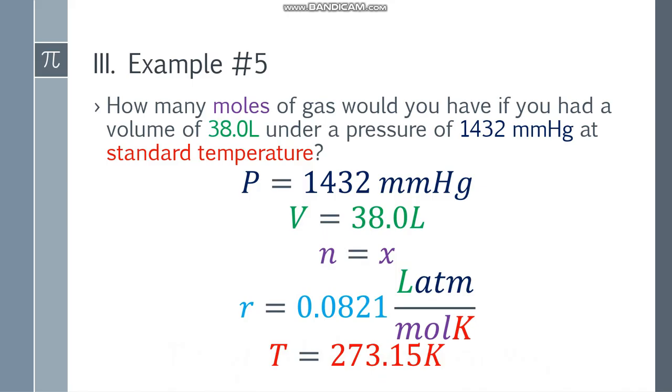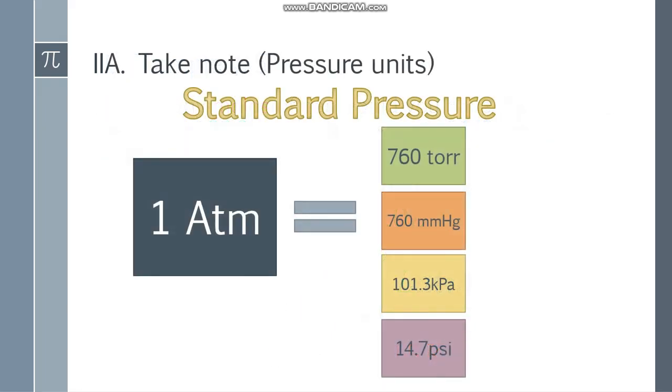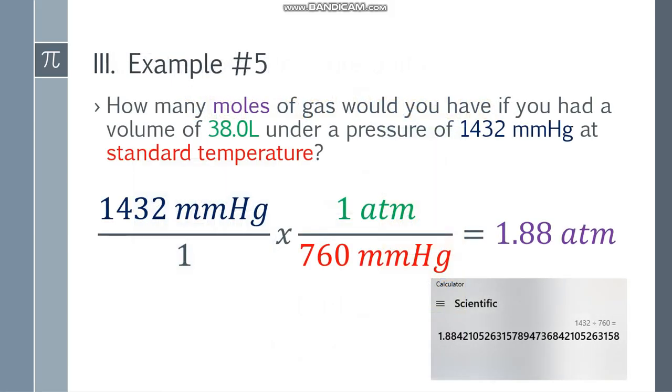But, ang problem natin, naka mmHg ito. We need to change it to ATM. Check natin yung conversion unit. Ang 1 ATM daw ay 760 mmHg. Lagay mo yung 1432 mmHg yan. Multiply mo siya sa 1 ATM. Divide mo siya sa 760 mmHg. Para mag-cancel yung mmHg. And the answer will be 1.88 something. 1.88 na yung makuha ko.